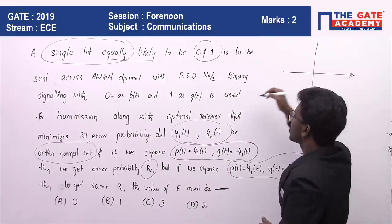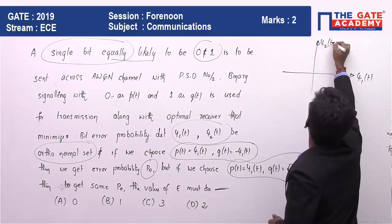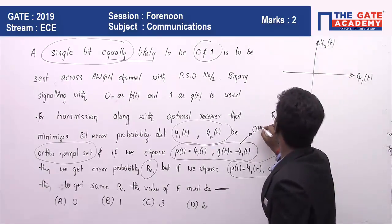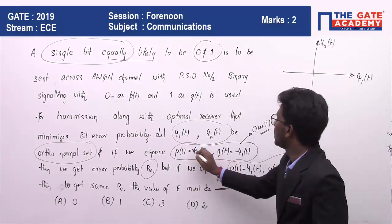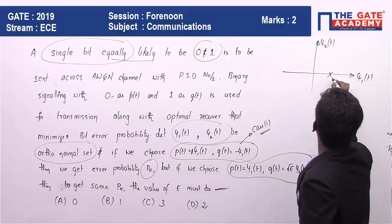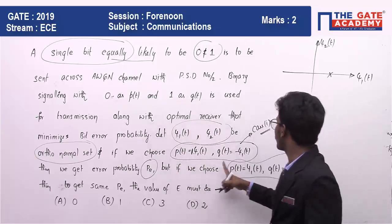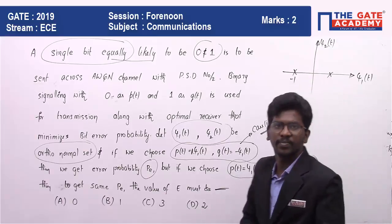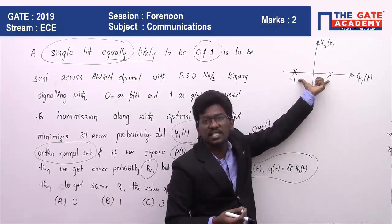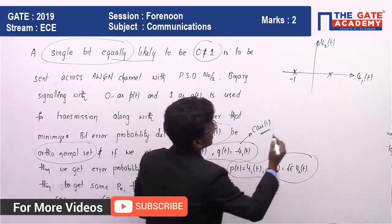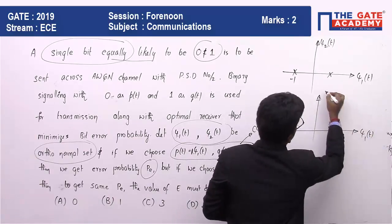The orthonormal sets given are ψ1(t) and ψ2(t). For case 1, bit P(t) is at 1 unit distance from ψ1(t). So bit 0 is at ψ1(t) and bit 1 is at -1. This is the first constellation. For the second case, how do we get it?